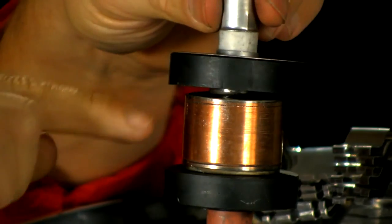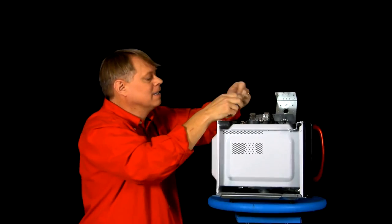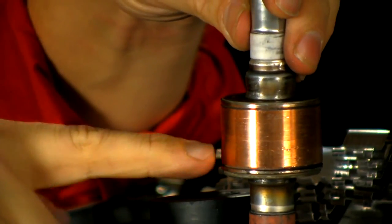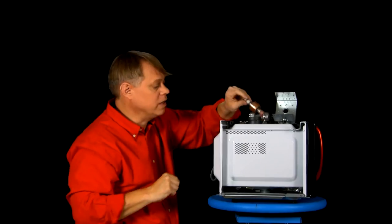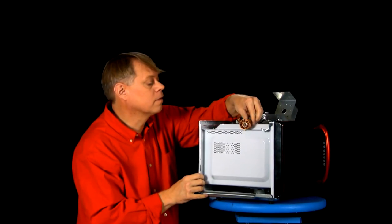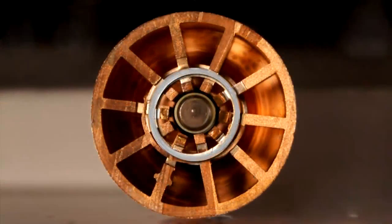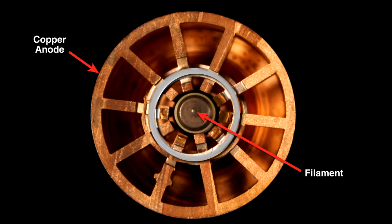The key parts are these two magnets and the vacuum tube. Now, I have another one so you can see the inside.